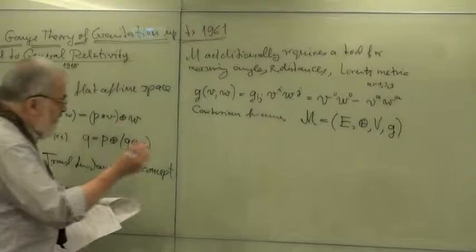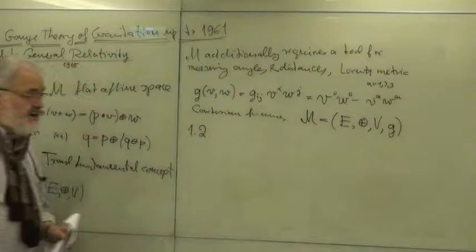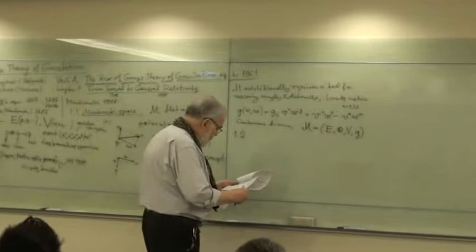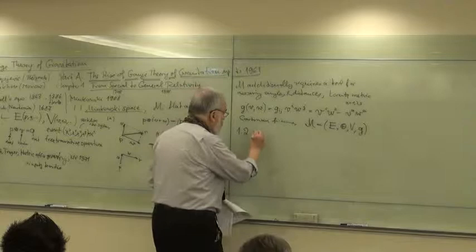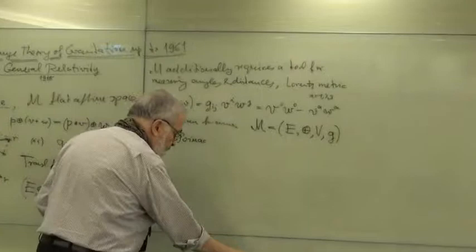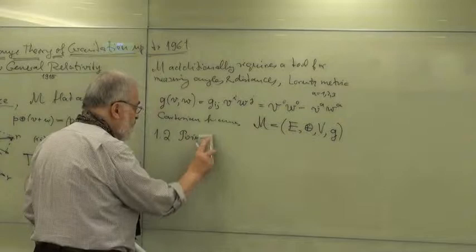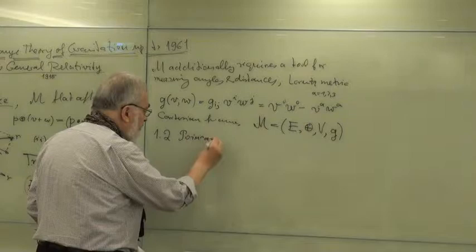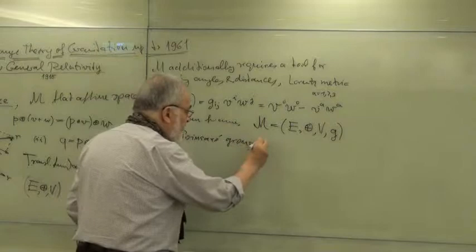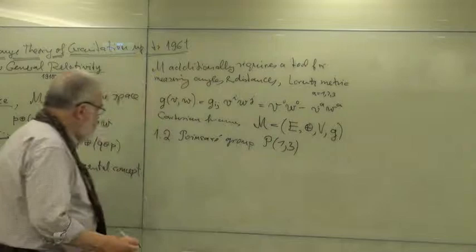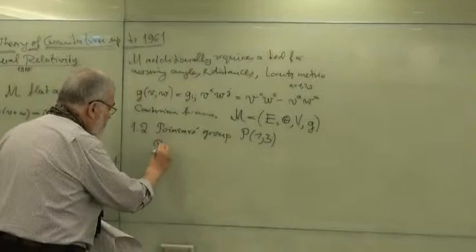Now of course, the important concept in a space is the group of motions. In Minkowski space, the group of motions is called the Poincaré group. Section 1.2 is Poincaré group. The Poincaré group we can denote by P1-3 because of the signature. It's defined as a semi-direct product.